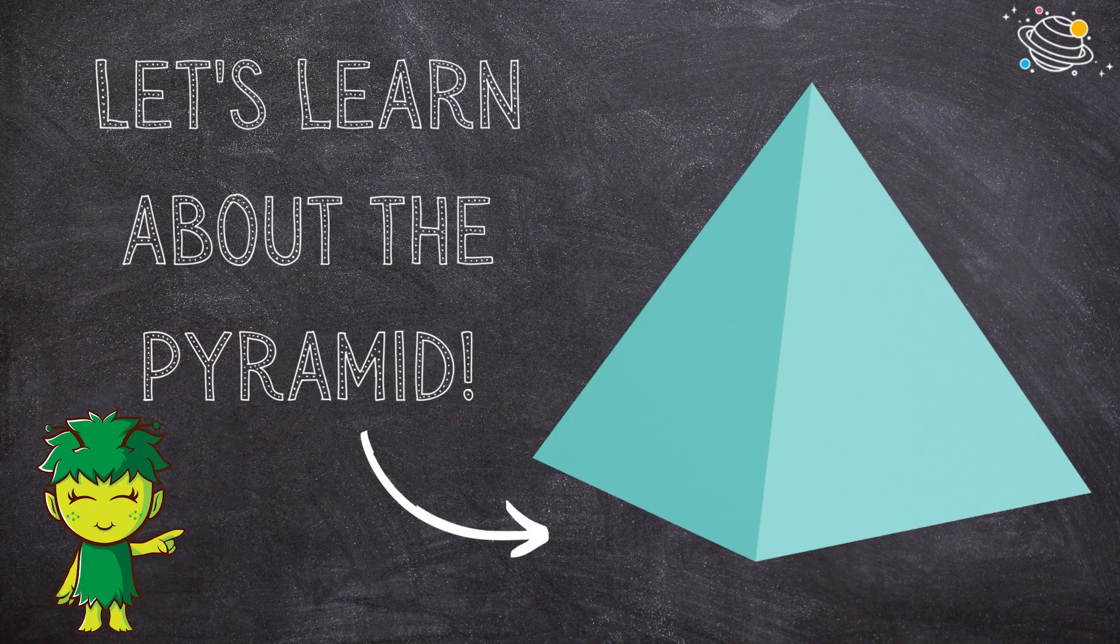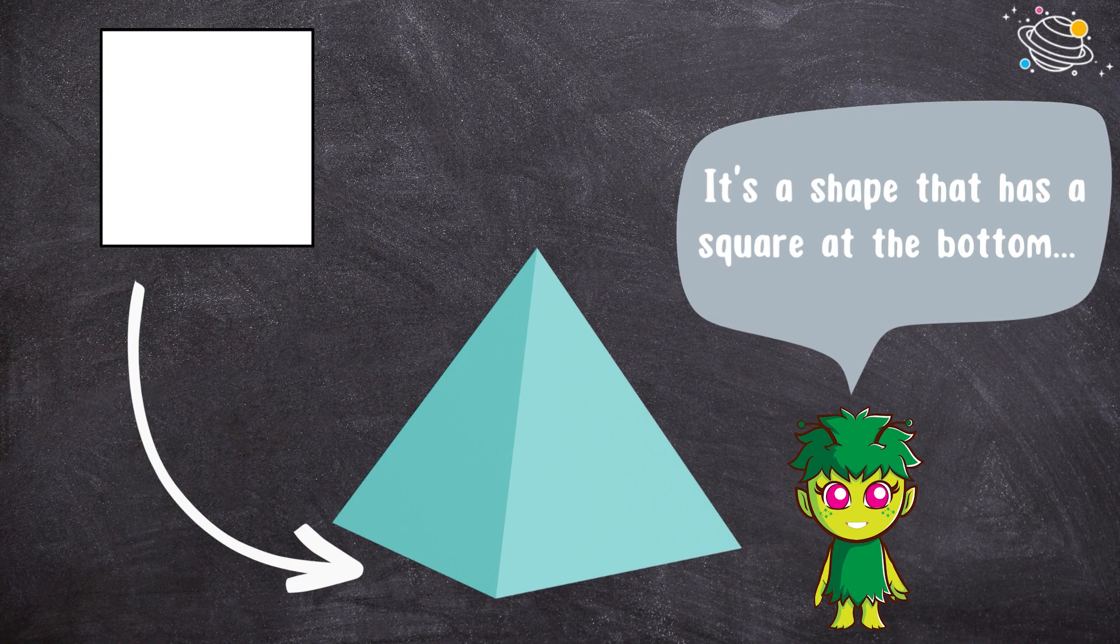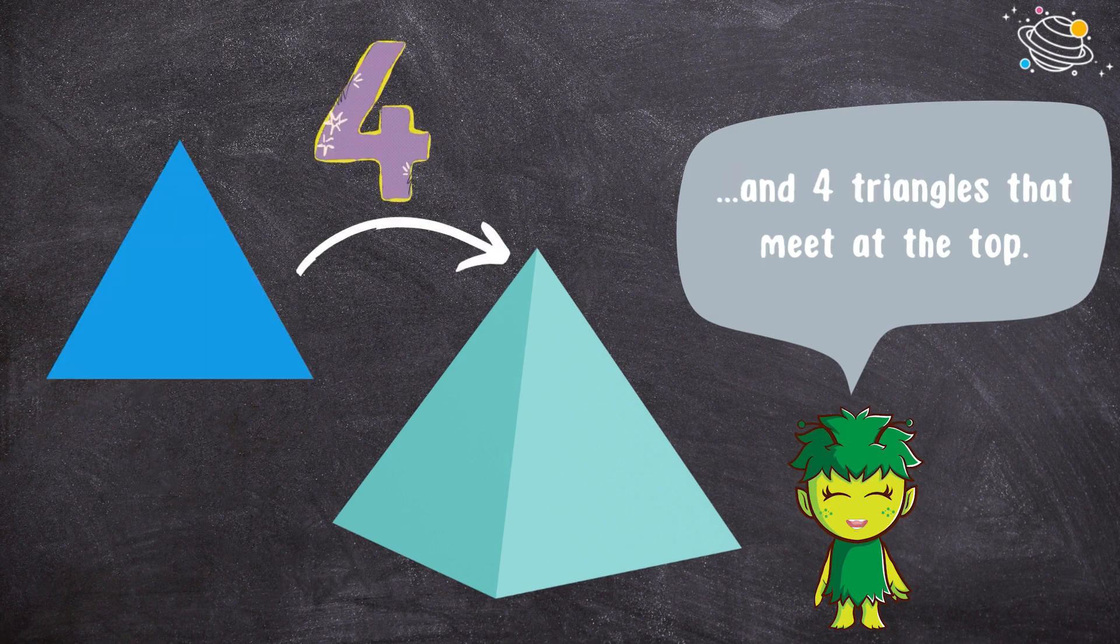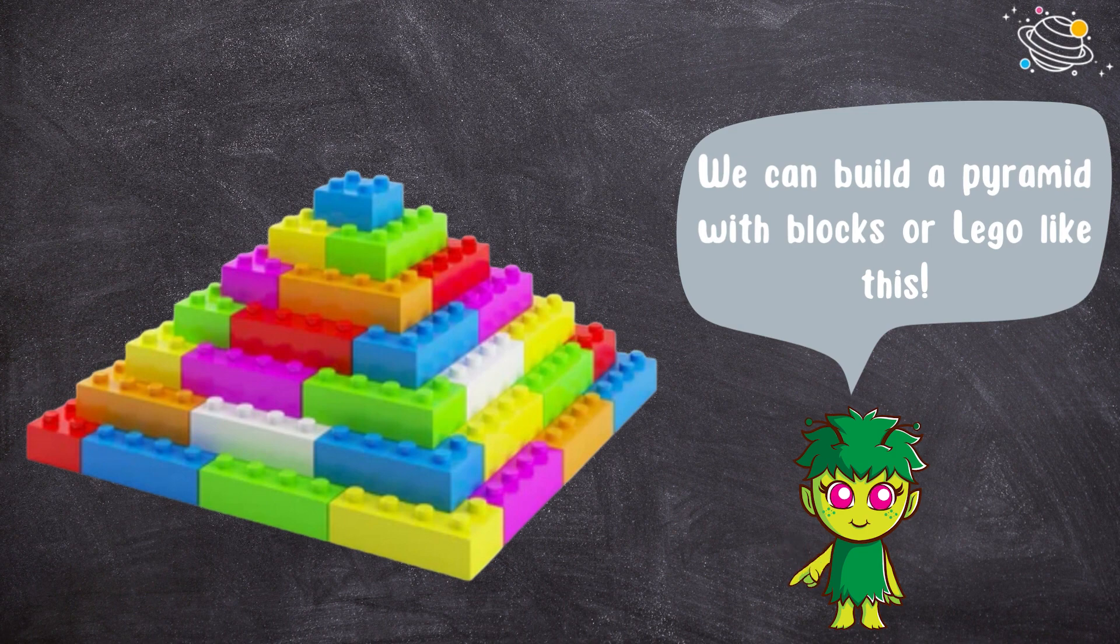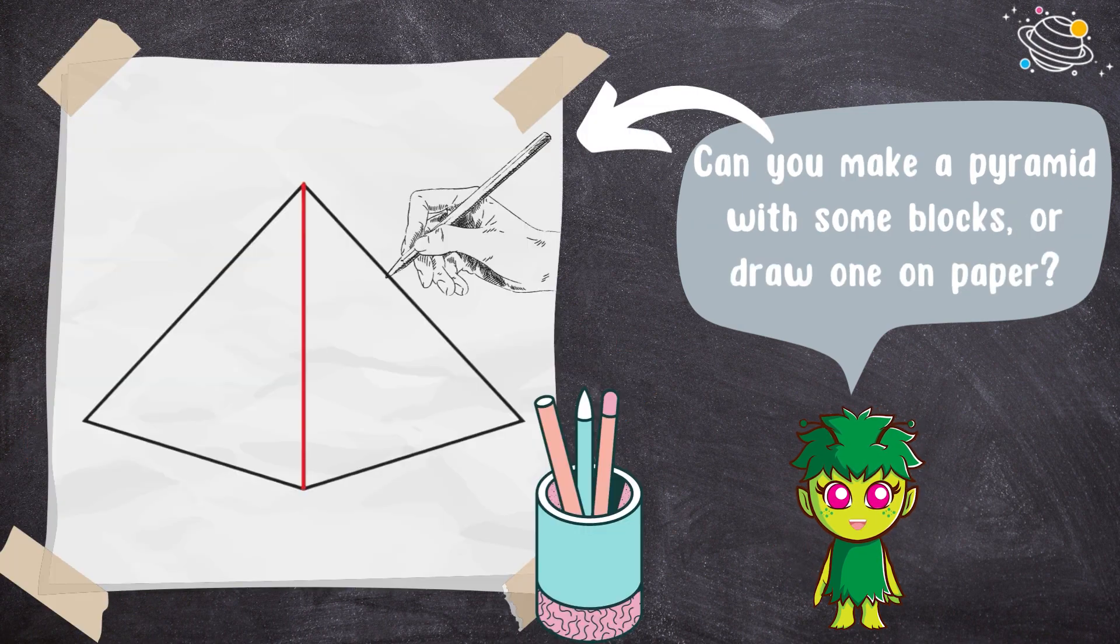Let's learn about the pyramid. It's a shape that has a square at the bottom and four triangles that meet at the top. We can build a pyramid with blocks or lego like this. Can you make a pyramid with some blocks or draw one on paper?